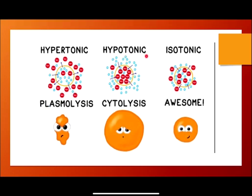In the hypotonic solution, the NaCl molecules enter inside the cell, and the water molecules come outside. Since the NaCl molecules are bigger in size compared to water, the cell swells up — that is called cytolysis. In the isotonic solution, there are equal amounts of NaCl and water both inside and outside the cell, so no change occurs in the structure of the cell.